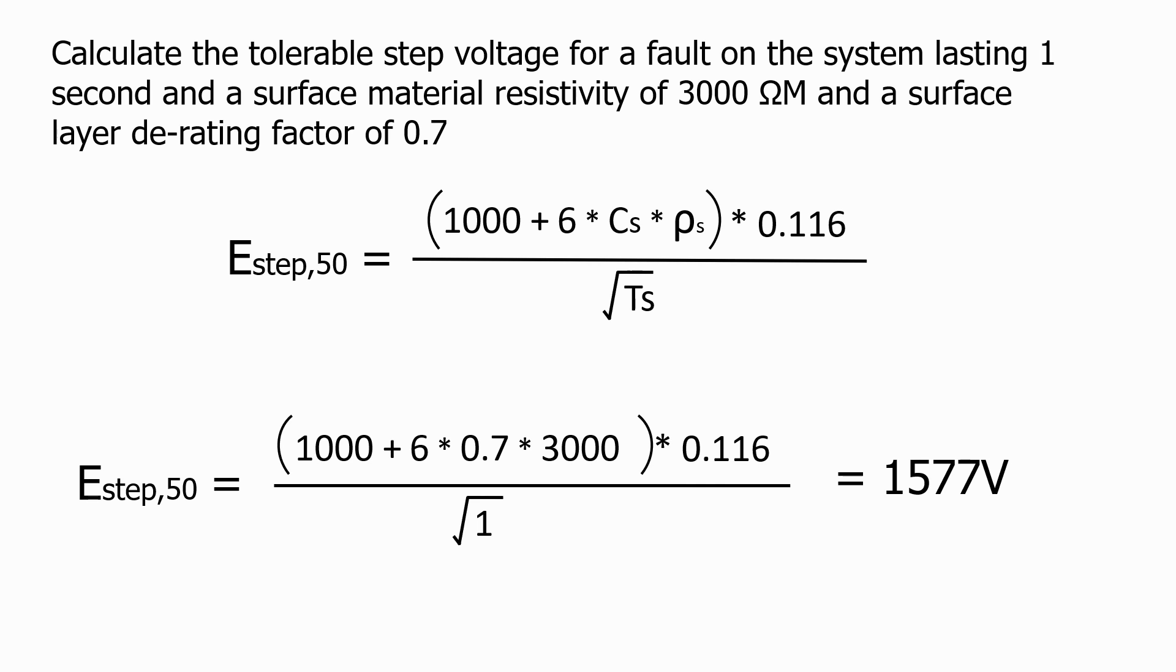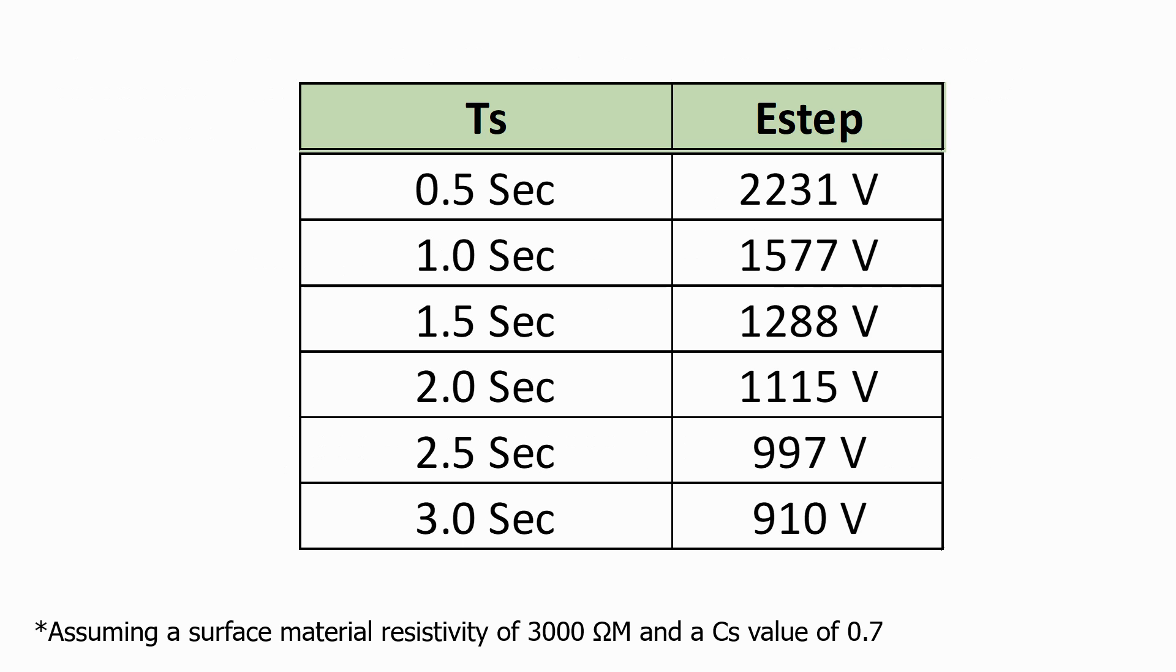If we keep the other parameters the same and vary the fault clearance time, we can see this has a significant effect on the tolerable step voltage. For 0.5 seconds we get a value of 2231 volts, but if we assume that all of the main protection systems have failed and we get a fault clearance of 3 seconds, the tolerable step voltage drops all the way down to 910 volts.